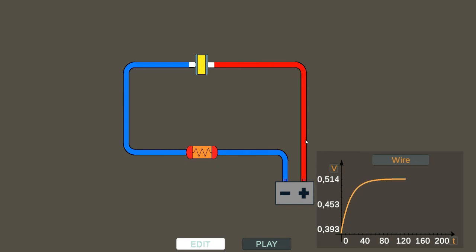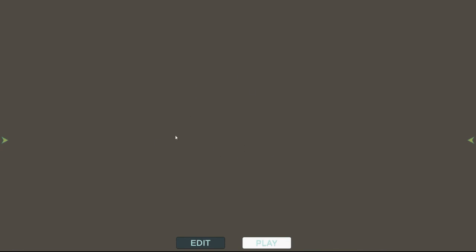For what concerns the current, I can observe it by pressing I when the graph is active. This works only for wires. We can also create a circuit with a resistor and a capacitor in parallel.